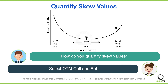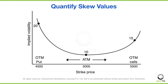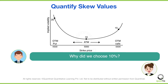Then you select an out-of-the-money call and out-of-the-money put option. Which out-of-the-money strike price to select? One method is picking the options whose strike prices are 10% from the at-the-money option. In the graph shown on the screen, the at-the-money strike price is 5,000. Thus, the out-of-the-money put and out-of-the-money call options with strike prices of 4,500 and 5,500 can be selected.